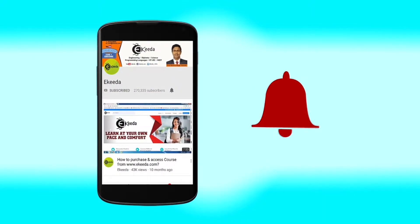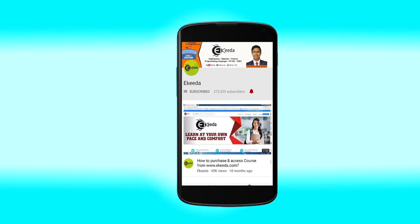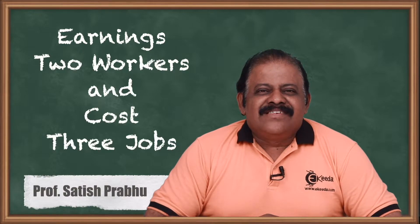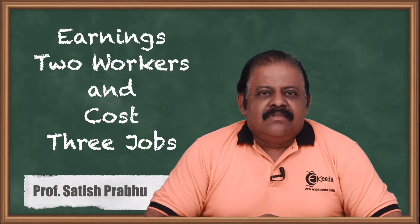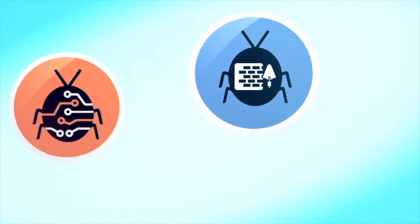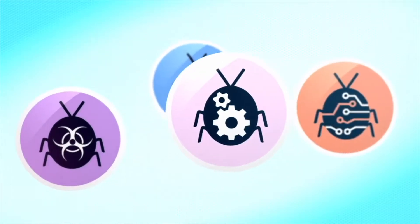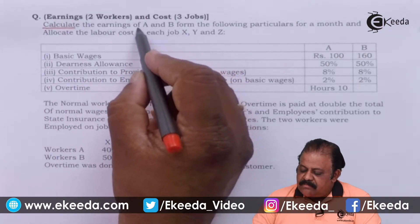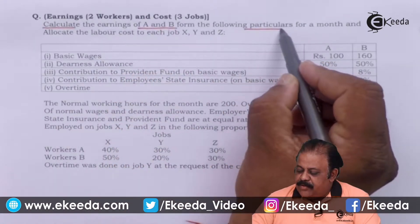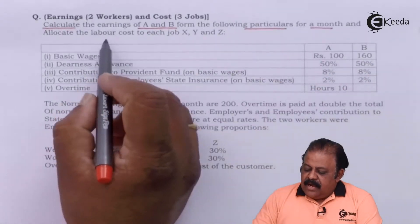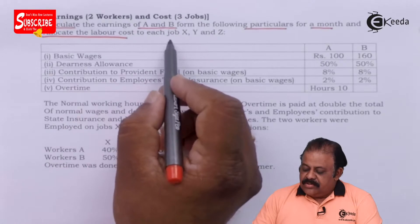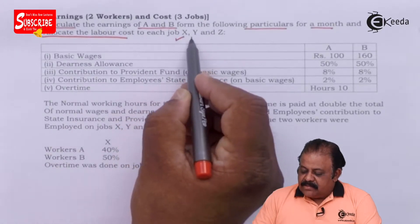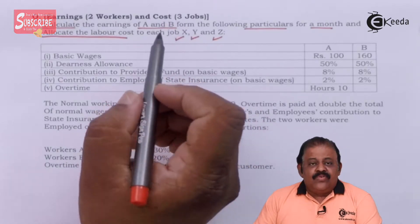Hello friends, let us discuss one question where two workers are involved and there are three jobs, where we are required to distribute the amount of wages. Calculate the earnings of A and B from the following particulars for a month, and allocate labor cost to each job X, Y, Z.